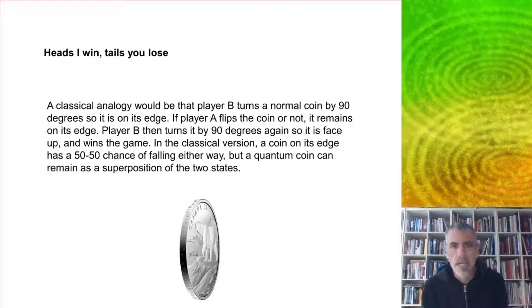A classical analogy of this would be that player B turns a normal coin by 90 degrees, so it's on its edge. If player A flips the coin or not, it's still going to remain on its edge. And then player B turns it by 90 degrees again, so it is face-up and wins the game. Of course, in the classical version, a coin on its edge has a 50-50 chance of falling either way. But the thing is, a quantum coin, you can do this. This is really the great thing about quantum probability - you can keep a superposition of two states.